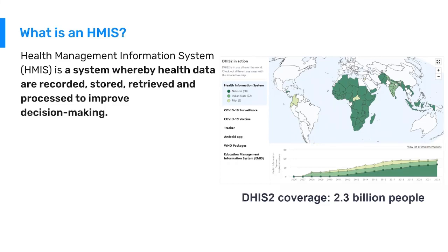Currently, as of 2022, DHIS-2 is at national scale in 68 countries, 22 Indian states, and is currently piloting in an additional six countries. You can see the scale of growth of DHIS-2 serving as an HMIS from 2006 to 2022. Today, DHIS-2 serving as an HMIS covers about 2.3 billion people worldwide.